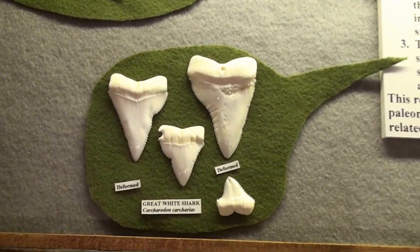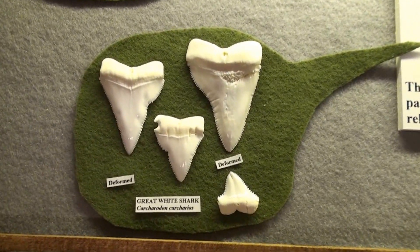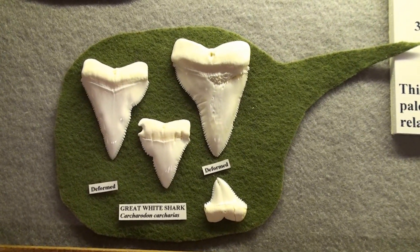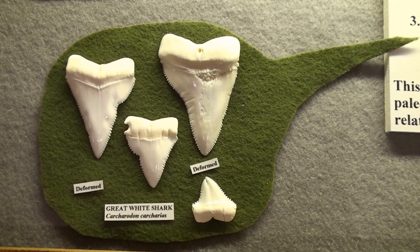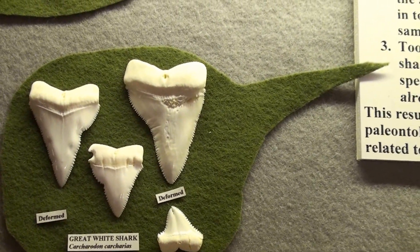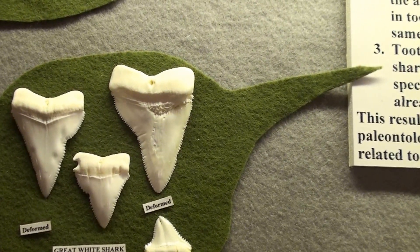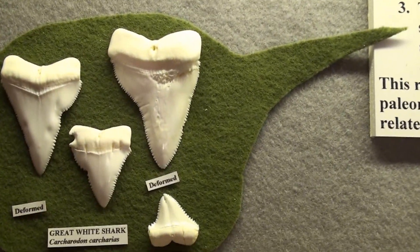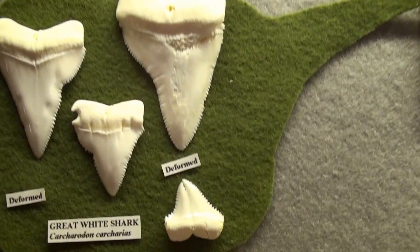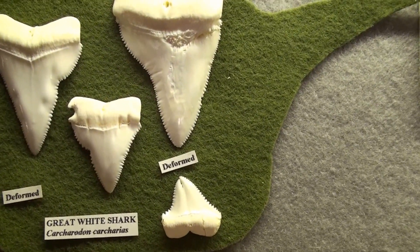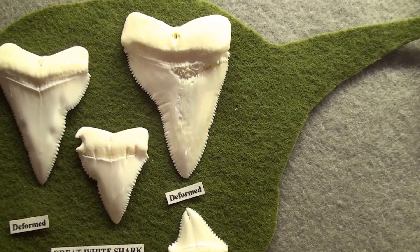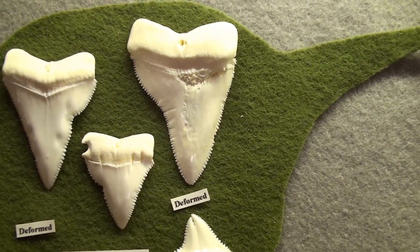We're looking at some pathological teeth from Great Whites. These are recent or contemporary teeth, not fossilized. You can see split teeth and little wavy patterns in the blades.